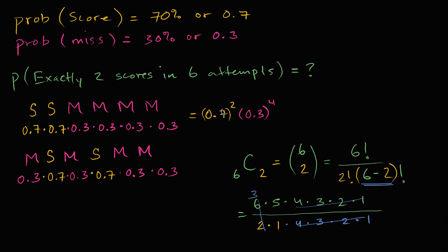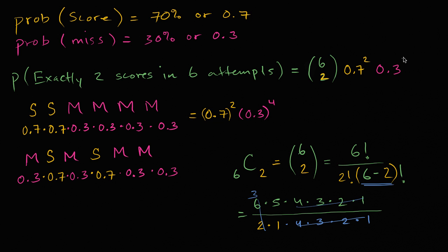The probability for each of those arrangements is 0.7 squared times 0.3 to the 4th power. So the probability of exactly two scores in six attempts — this deserves a little drum roll — is going to be six choose two times 0.7 squared times 0.3 to the 4th power. Notice these exponents necessarily add up to six: if the success exponent were three, then the failure exponent would also be three.